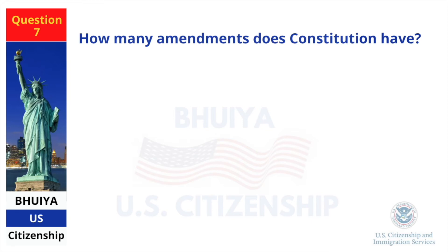How many amendments does the Constitution have? 27.